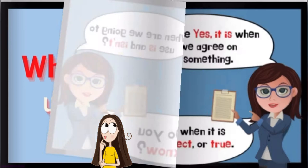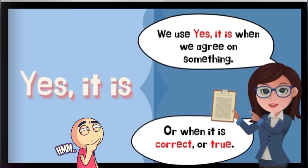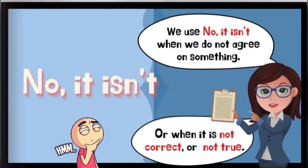We use yes, it is, when we agree on something, or when it is correct or true. We use no, it isn't, when we do not agree on something, or when it is not correct or not true.